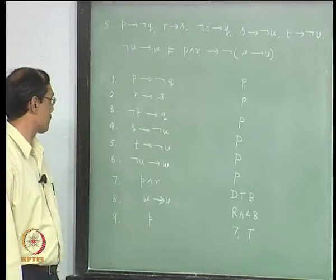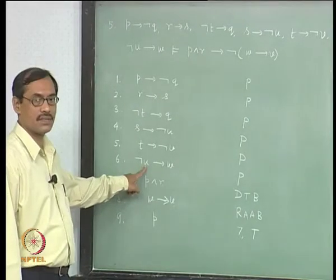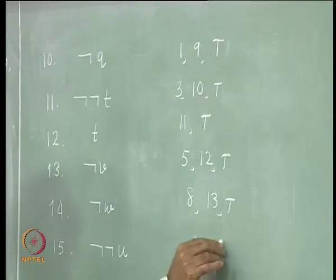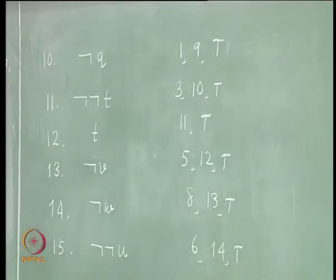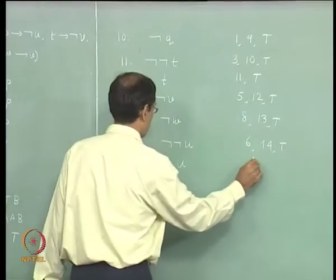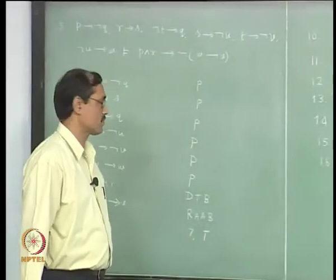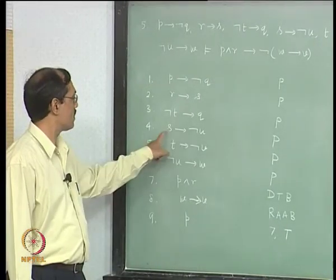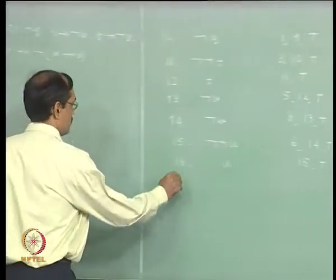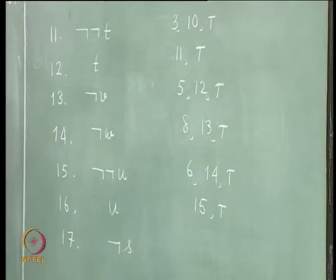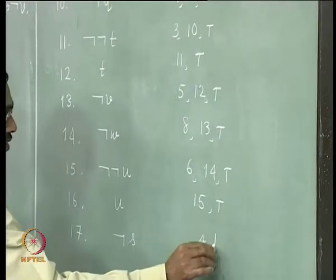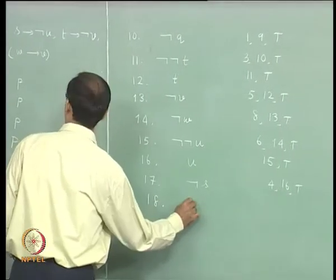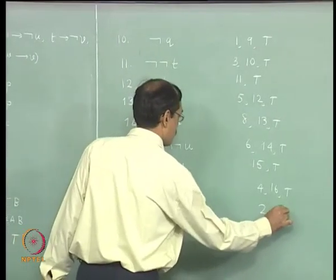Next, from line 10 by modus ponens. Let us bring it to better form: u by double negation. Next, we have got u. This is appearing here. So line 17 is not s, that comes from line 4 and line 16 by modus ponens. That gives not r the same way — from lines 2 and 17 by modus ponens.